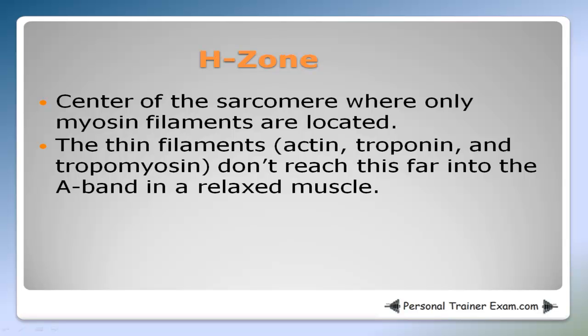The H zone is the region in the center of the sarcomere where only myosin filaments are located. The thin filaments — actin, troponin, and tropomyosin — don't reach this far into the A band in a relaxed muscle.